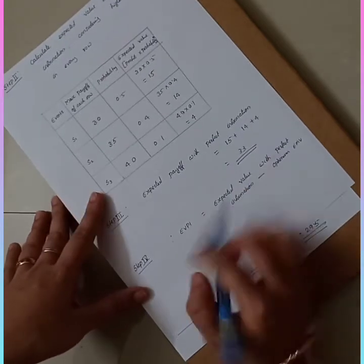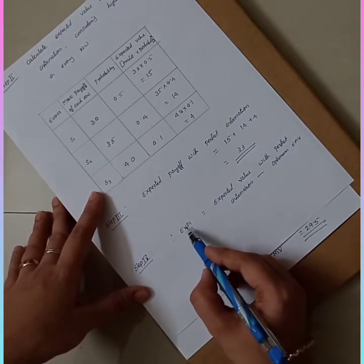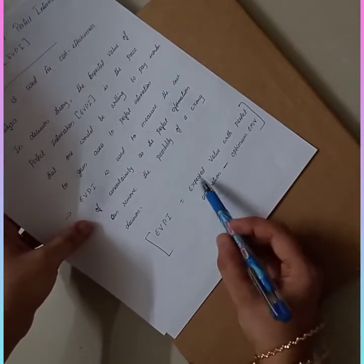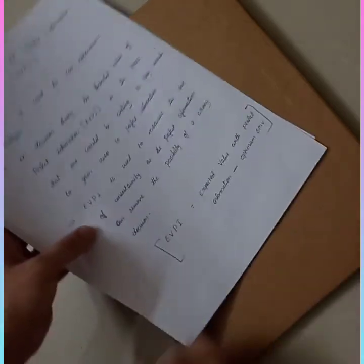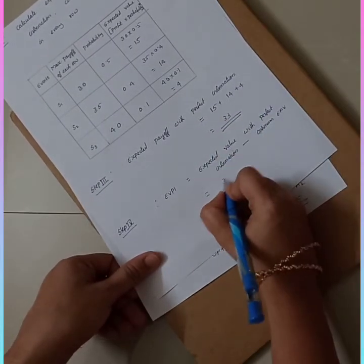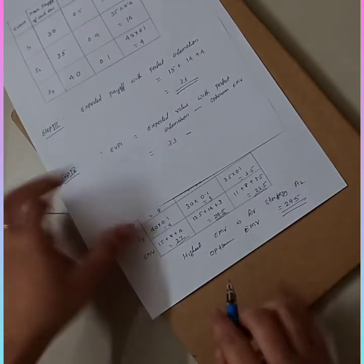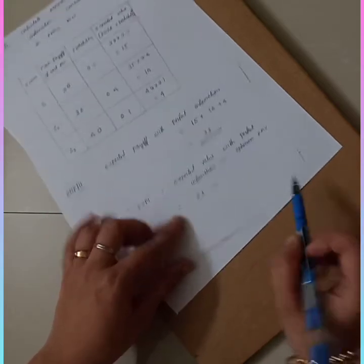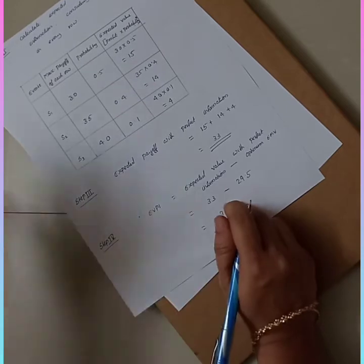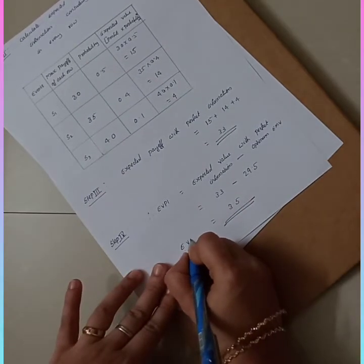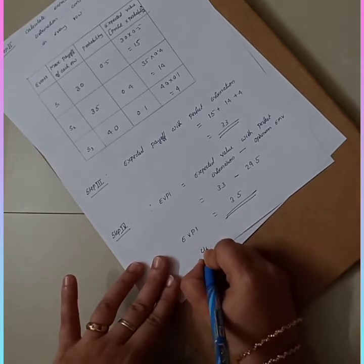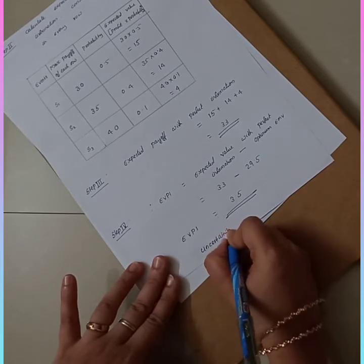The problem is not over — step four is to calculate EVPI using the formula: EVPI = Expected Value with Perfect Information minus Optimum EMV. So EVPI = 33 − 29.5 = 3.5. This is the final answer. EVPI = 3.5, and this value is also called the uncertainty rate.